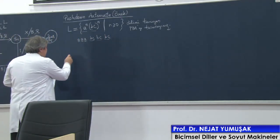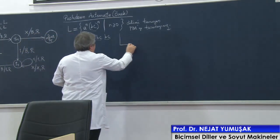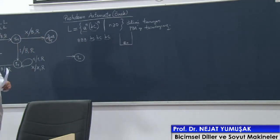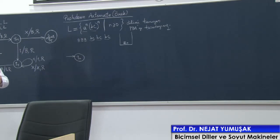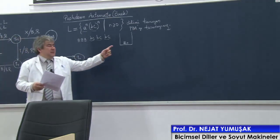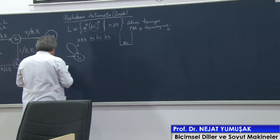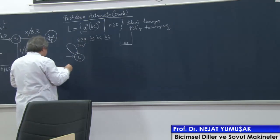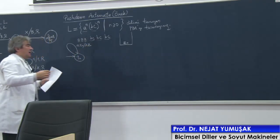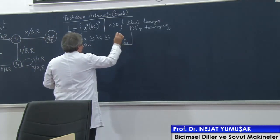Sevgili arkadaşlar. Q sıfır durumundayım, karşımda şöyle bir yığıt var. A okuduğum zaman yığıta büyük A simgesi ekleyeyim. Yani Q sıfır durumundayken şeritten A okuyabilirsiniz. A'yı okuduğunuzda yığıtta Z0 olabilir. A okudum, yığıtta Z0 var; buna karşılık yığıta A ekleyebilirsiniz. Her küçük A simgesini okuduğumda yığıta bir A ekleyebilirim.